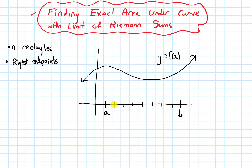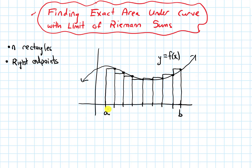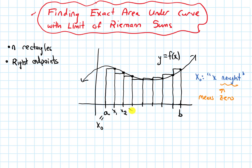In the first sub-interval, the right endpoint is here. I draw up until I hit my curve, then horizontally for the top, then a line down for the other side. For the next sub-interval, I draw a line vertically until I hit the curve, then a horizontal line for the top. Now I've drawn in all the rectangles. I want to label these tick marks. Where a is, I'll label this x subscript 0 — by convention pronounced 'x naught,' an older English word for zero. The next tick mark is x₁, then x₂, x₃, all the way until I get to b, which is xₙ since I'm using n rectangles.